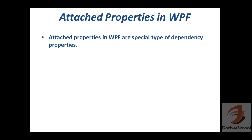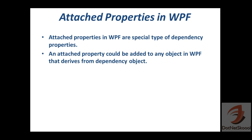Attached properties in WPF are a special type of dependency properties. This is the reason why I wanted you to know what dependency properties are in the first place. Every attached property is created just like a dependency property, so you can say it is a dependency property with some extra features. An attached property can be added to any object in WPF that derives from DependencyObject.